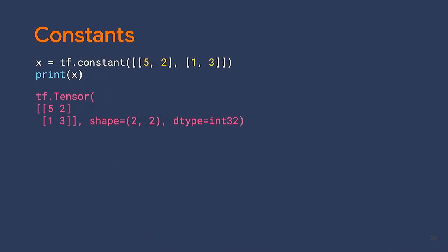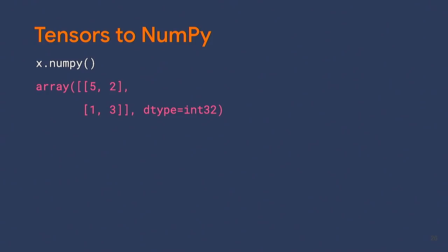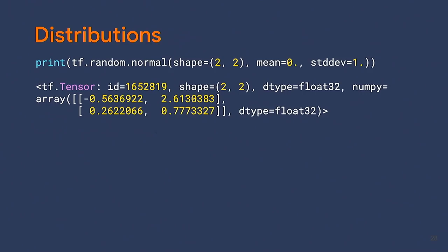You can also use TensorFlow 2 a lot like NumPy. Whenever you see 'tensor,' just think NumPy ndarray. TF tensors have a shape and a data type. One nice thing: tensors have a .numpy() method so you can go straight from tensors to NumPy. Just like NumPy, TF2 has distributions — if you want to create a random normal, here's how. You can do math in TF2 much like NumPy, with things like tf.square and tf.linalg.matmul.